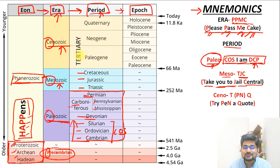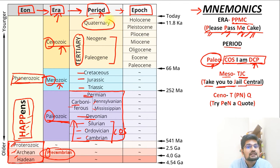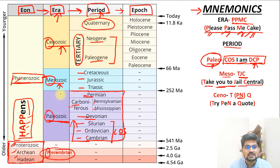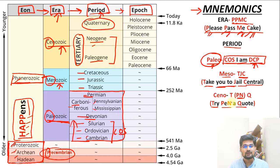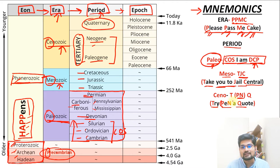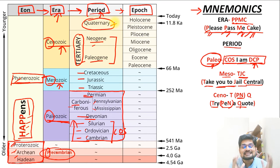In the Cenozoic era, we have the Tertiary period (divided into Paleogene and Neogene) and the Quaternary period. This gives us T(PN)Q. The mnemonic is 'Try pen a quote' — T for Tertiary, PEN in brackets for Paleogene and Neogene, and Q for Quaternary. That is how you remember the periods of the Cenozoic era.